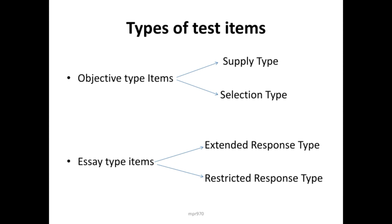Objective type items are further classified into supply type and selection type. In supply type items, the responses are supplied along with the items and the respondee has to select the correct answer from the supplied responses. In selection type items, the stem is an incomplete statement and the respondee has to select the correct answer to fill in the statement from the given responses.